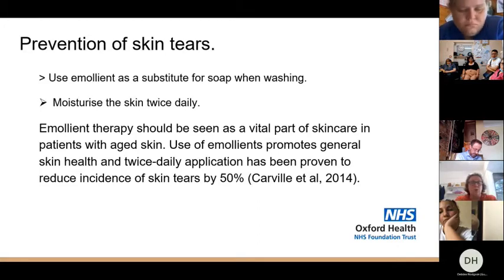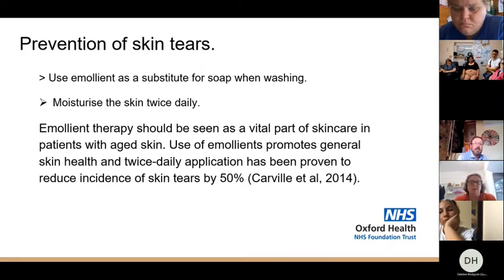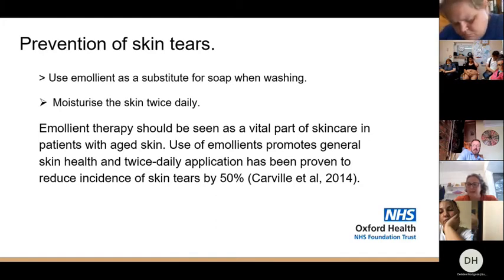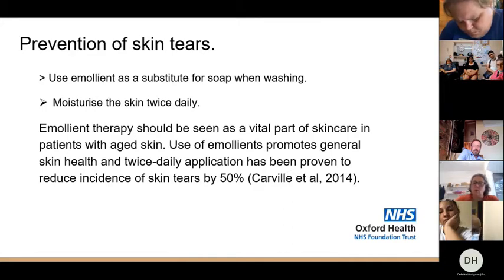People with dry skin — which is most older people — should be having their skin moisturised twice a day. The cream emollients don't last that long; in a perfect world you'd apply them four times a day, but twice daily — morning and bedtime — all over their arms and legs will help. This is vital and should be seen as a core part of skincare for older people. Twice daily application has been proven to reduce the incidence of skin tears by 50%. If you've identified somebody at risk, their care plan needs to include application of moisturising emollient cream twice a day — and you've already halved their risk.